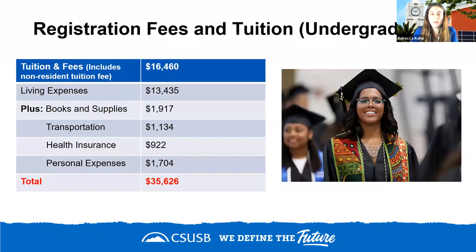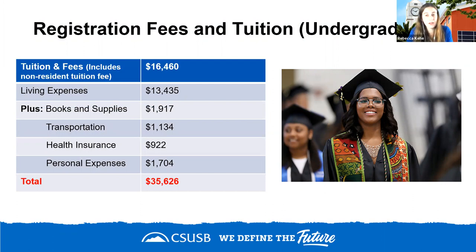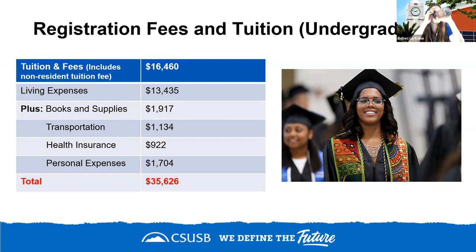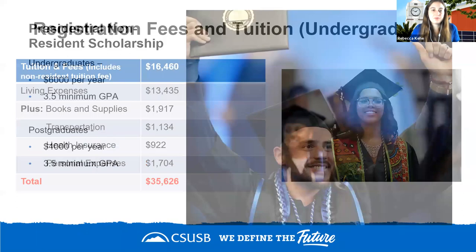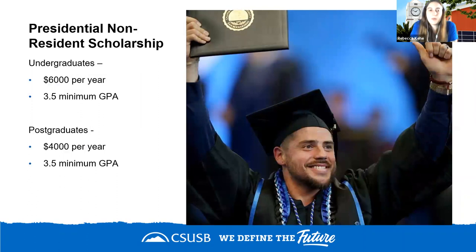Regarding costs: the campus provides estimates for tuition and living expenses for one academic year, based on campus housing. Students are not required to live on campus unless they are under 18 and don't have a parent or guardian in the area. CSUSB also offers the Presidential Non-Resident Scholarship: $6,000 USD per year toward tuition for undergraduate students, bringing annual tuition to approximately $10,000 USD. The only requirement is a minimum 3.5 high school GPA — no SAT, essays, or other test scores needed for the scholarship.